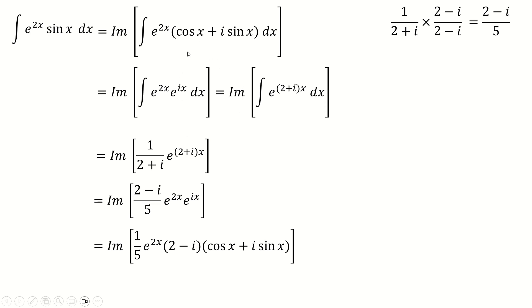Going to rewrite e to the ix as cos x plus i sine x. If I expand out these brackets, I'll get 2 cos x and so on. I'll get all this. And I only care about the imaginary part, because that was the only bit that my integral actually had here.